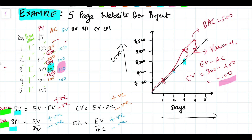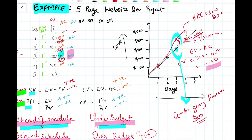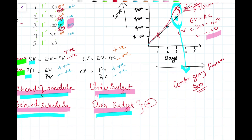The budget at completion is $500 and the work is done, but the earned value is only $400, leaving $100 of work with no remaining budget. On day three, when the variance first appeared, you should ask: do I have a contingency reserve? If you have an extra $100 set aside, use that. If not, go to your management reserve — get approval from your manager to use those funds.